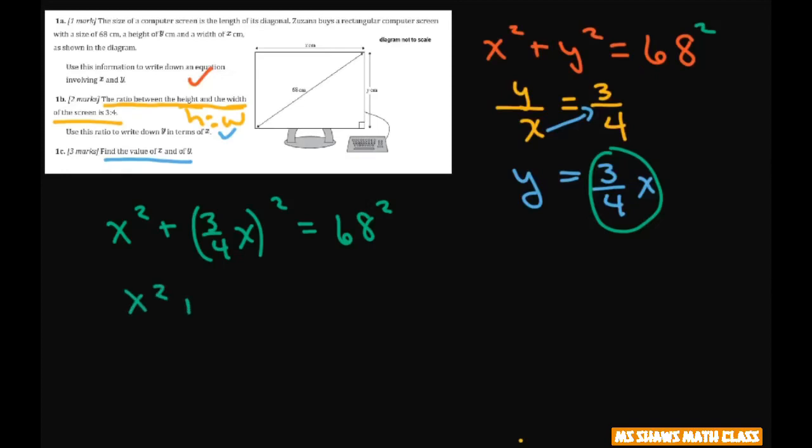So this is going to give us x squared plus 9 sixteenths x squared equals, and if you square this out, this is going to be 4,624. All right, so let's solve this.